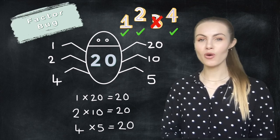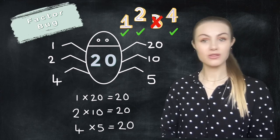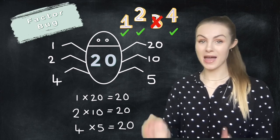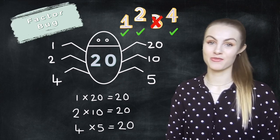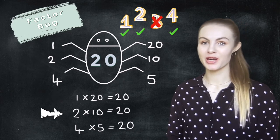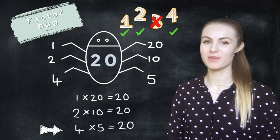Now because 4 and 5 are consecutive numbers we know that there are no more factors because we've met in the middle. Now we can see we've got all our pairs of factors. 1 times 20, 2 times 10, 4 times 5.